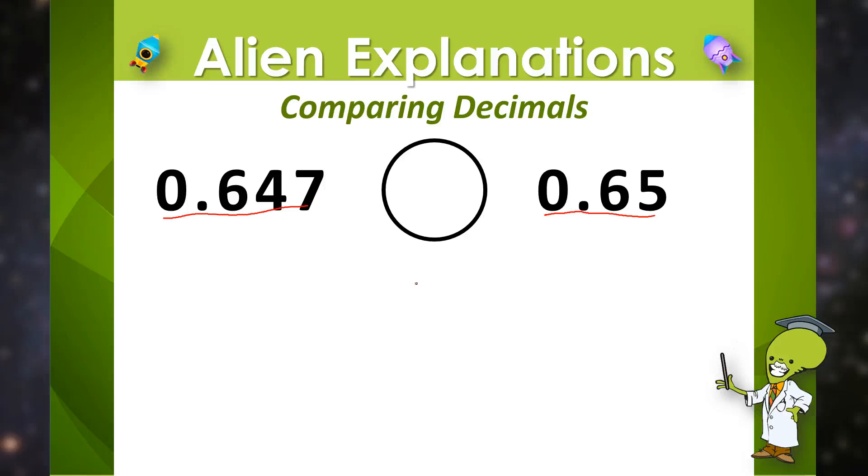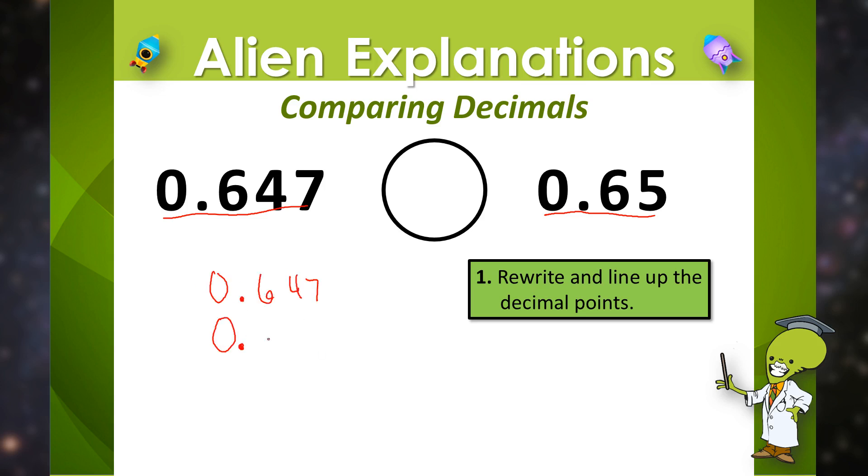To compare the decimal numbers it is important that we compare the digits in each of the place value spots. So to do that let's follow these three simple steps. First let's rewrite the numbers and line up each of the decimal points.